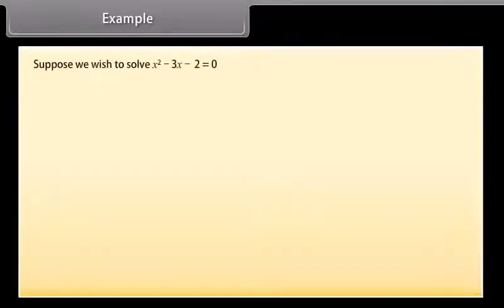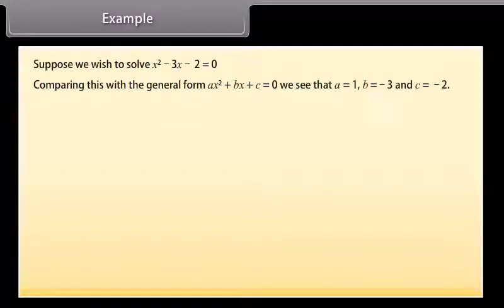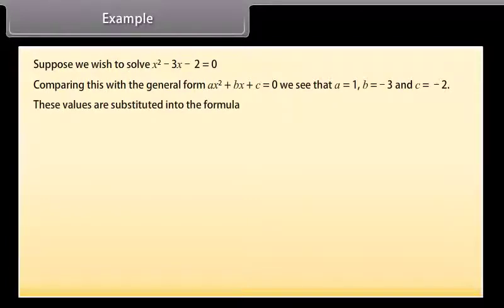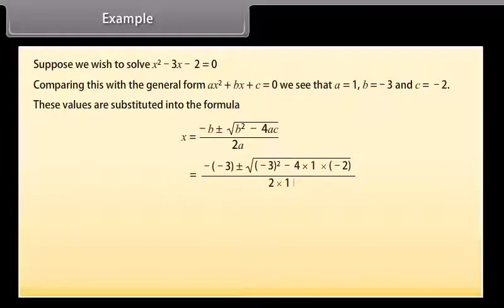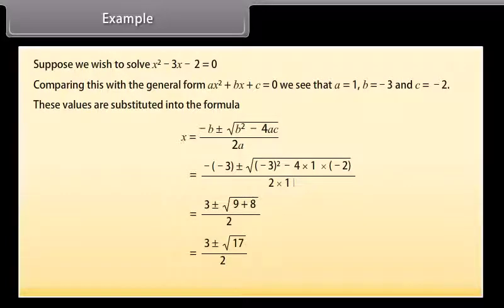Suppose we wish to solve x² − 3x − 2 = 0. Comparing with ax² + bx + c = 0, we see a = 1, b = −3, and c = −2. Substituting into the formula: x = [−(−3) ± √((−3)² − 4·1·(−2))] / (2·1) = (3 ± √17) / 2. These solutions are exact.